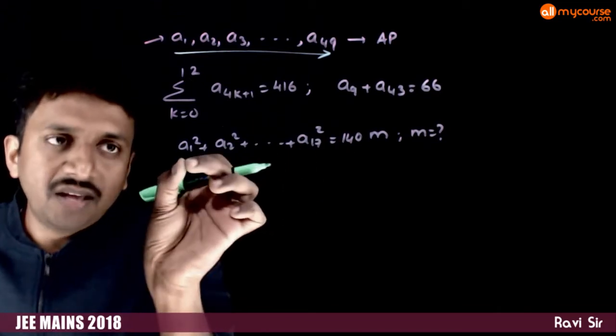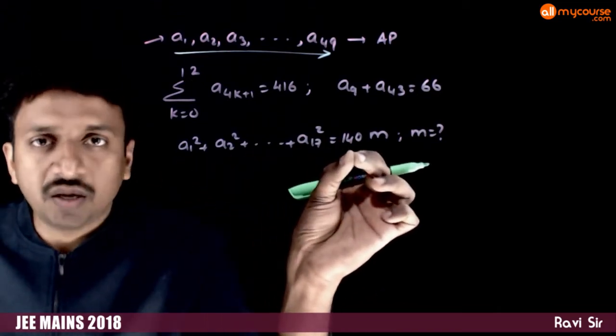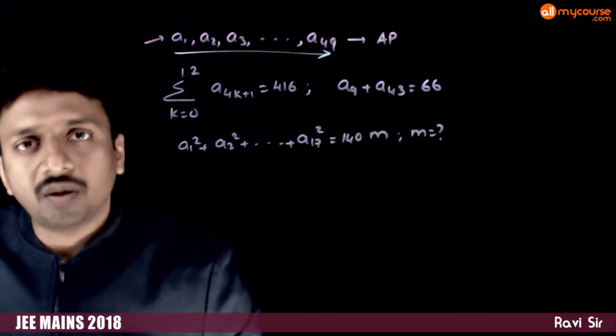Here a1 square plus a2 square and so on, a17 square is equal to 140m. What is m equal to?